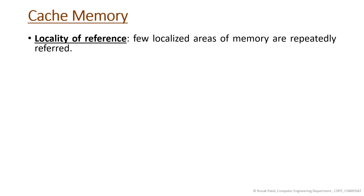Hello everyone. In this video we'll see the introduction of cache memory. Cache memory works on the principle of locality of reference, which means a few localized areas of memory are repeatedly referred. In your program, sometimes you have used a loop or some procedure.